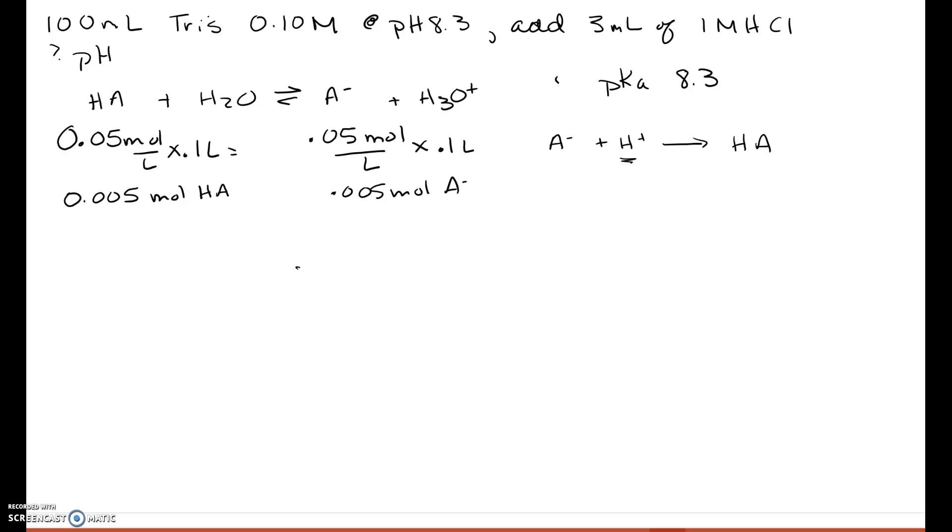We have 1 mole per liter of HCl, and we are adding 3 milliliters, which is 0.003 liters. And that gives us 0.003 moles of H plus.